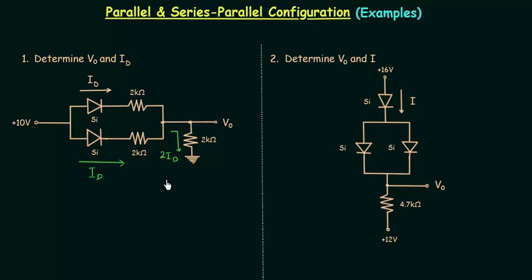Now we will determine the state of the two diodes. 10V is the potential at this point and we have to calculate V0. The direction of current is from left to right, which is similar to the direction of the arrow in the diode symbol. So the two diodes are forward biased and remain in the ON state, and I will replace them with their equivalent circuit.